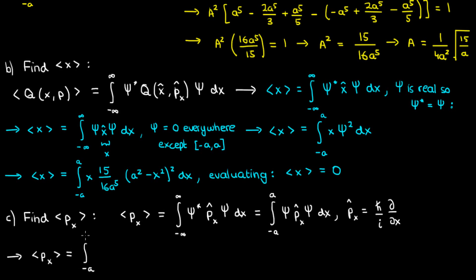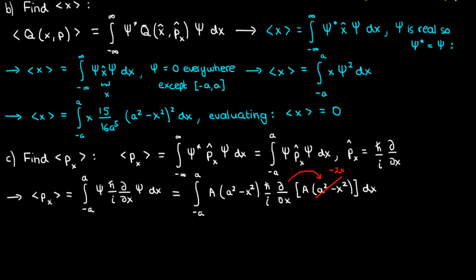The operator p̂ₓ is given by ℏ/i times ∂/∂x. If we plug it into the equation for ⟨pₓ⟩, here's what we get. Note that the partial derivative applies to the second ψ in this integral. We can now plug in the ψ's and get this expression. I've left the normalization constant as A to keep the writing simple. The partial derivative of a²-x² with respect to x is -2x,